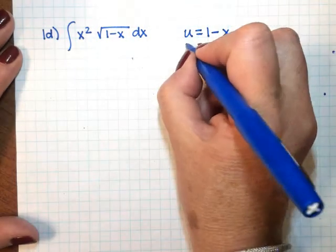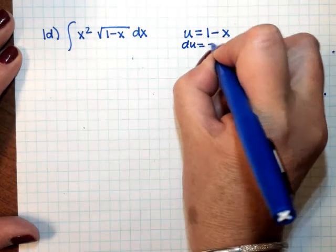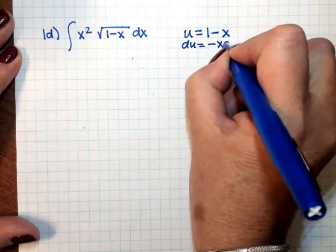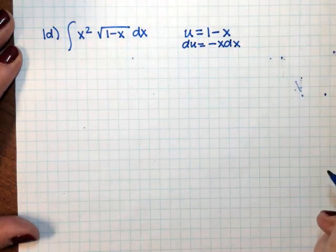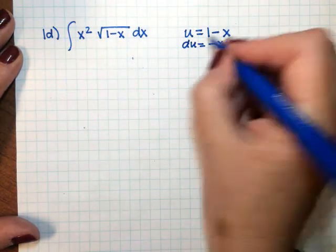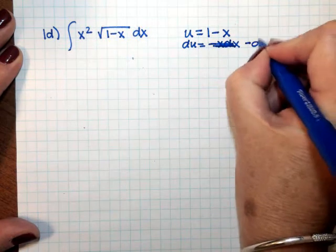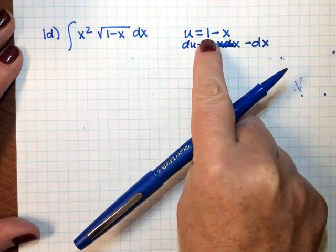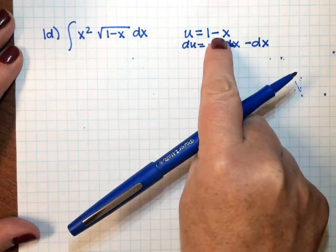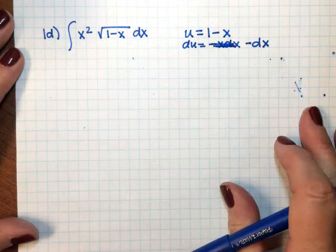When I go to find my du, that's going to be negative dx. When I take the derivative of 1, that's 0. The derivative of negative x is just negative dx.